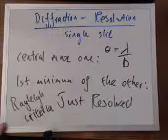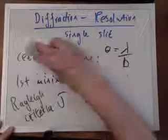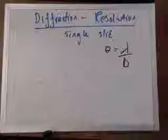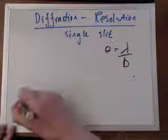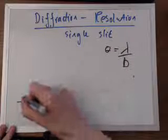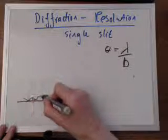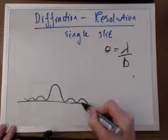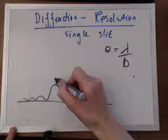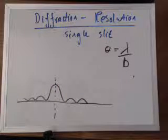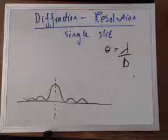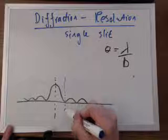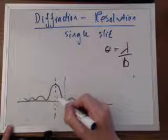So what does it look like when it just resolves? Well, I shall draw that picture now. What it will look like is it looks like this: we have the central maximum of one like that, so the line down to show it's the middle. And then what we'll have, the central maximum of the other for just resolving, just be able to make the two point sources of light, will be just above the first minimum of the other, and then look like this.